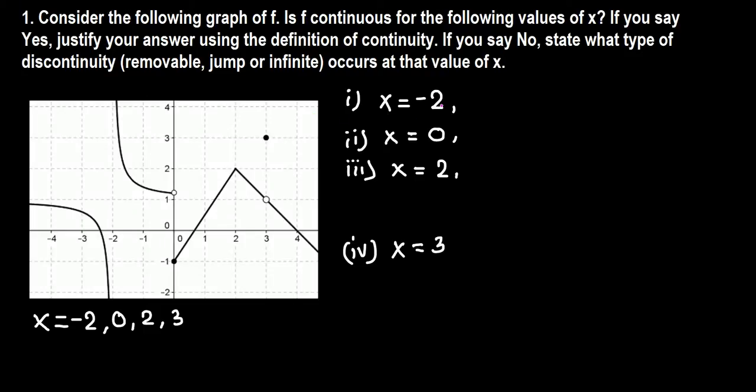At x equals negative 2, from the right side the function is increasing to positive infinity. From the left side, the function is decreasing to negative infinity. The limit does not exist, so the function is not continuous. The function is discontinuous at negative 2, and the name of the discontinuity is infinite for obvious reason.